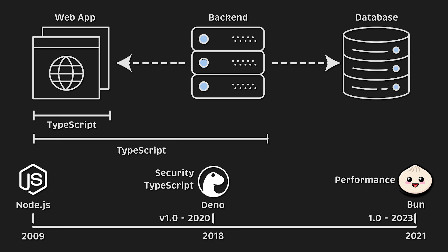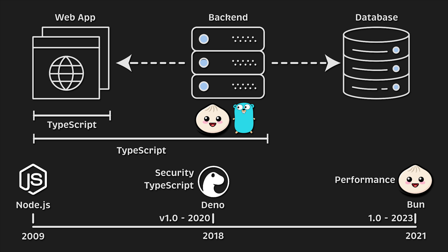On the other hand, we have GoLang, which was specifically developed for server-side applications and optimized for networking. The question is: should you stick with TypeScript and develop your back-end applications using BUN, or switch to GoLang for potentially better performance?